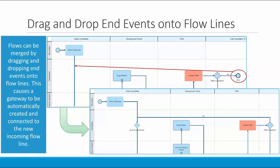You can also drag an end event onto a flow line and an exclusive gateway will now be automatically created and the flow will be connected to the new gateway, as you can see in the diagram here on the right.